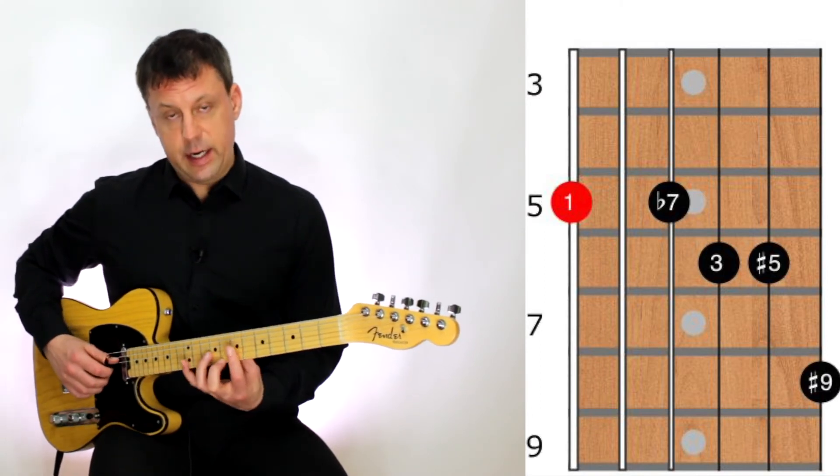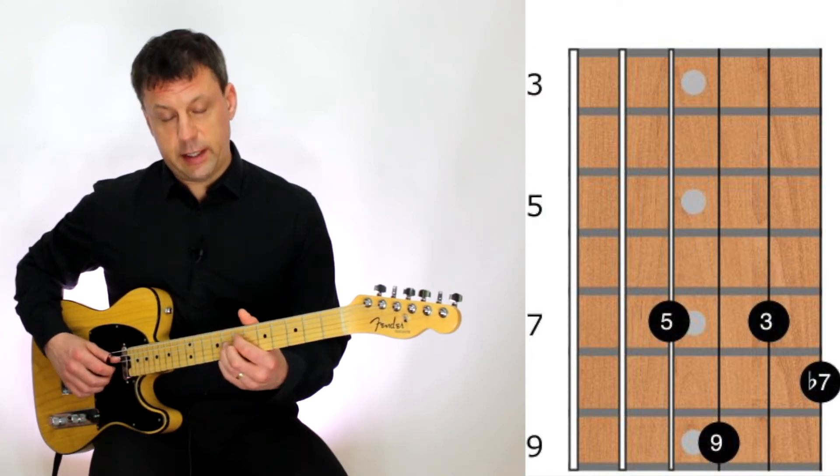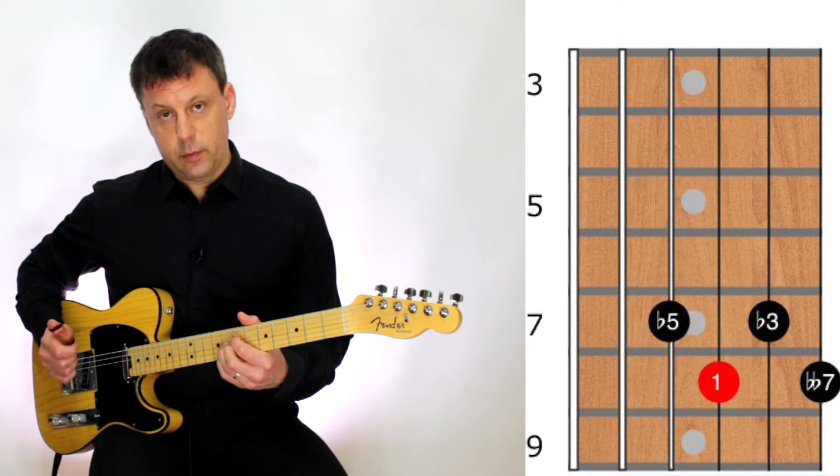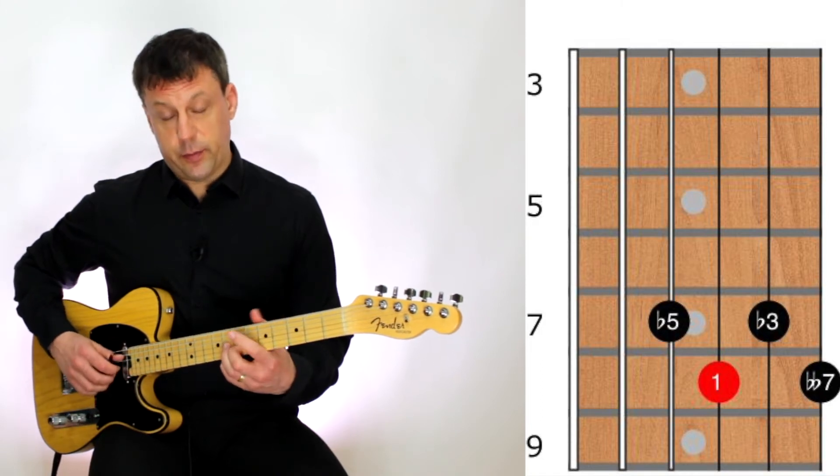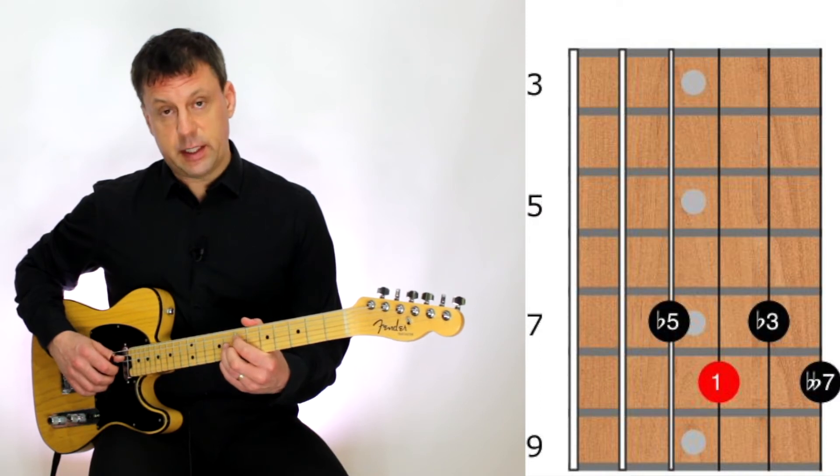We're going to go to a D dominant 9 chord followed by a D sharp diminished 7th chord. Often in a blues, if you go from the D7 back to the A7, you can in between put a D sharp diminished 7th chord in.